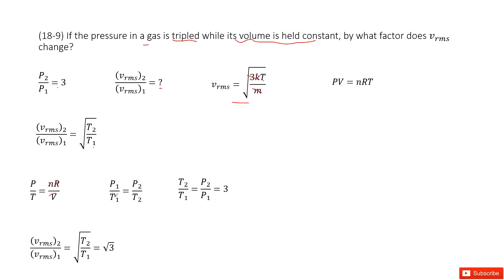So initial state P1 over T1 equals final state P2 over T2. Now in this problem, you can find the ratio T2 over T1. So T2 over T1 equals P2 over P1, which just equals 3.